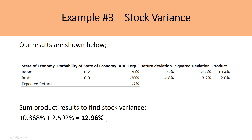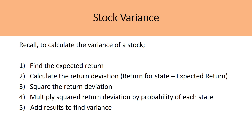That is the procedure for calculating a stock's variance. To recap the five steps: first, find the expected return. Second, calculate the return deviation by subtracting the expected return from the return for each state. Third, square the return deviation. Fourth, multiply the squared deviation by the probability of each state. Fifth, add up the results to find the variance.